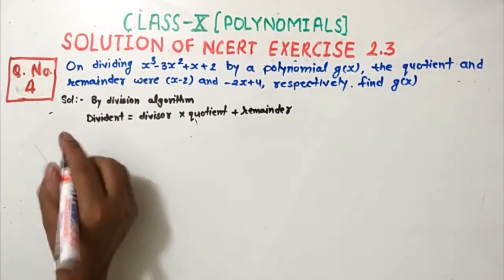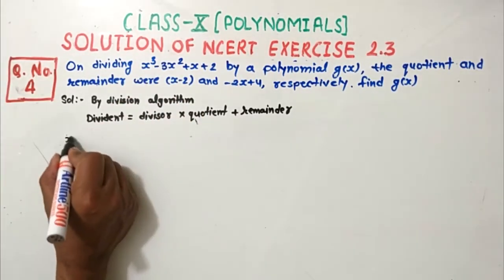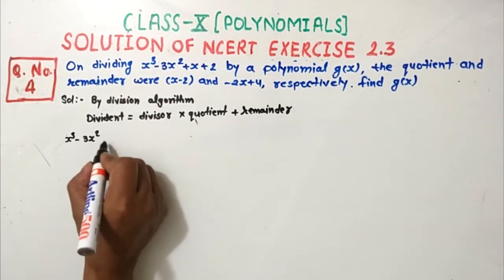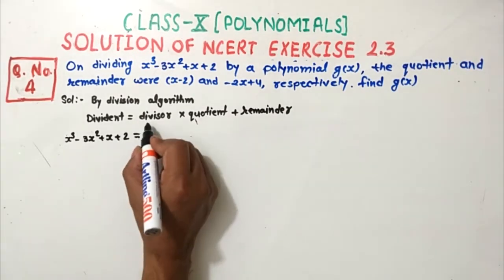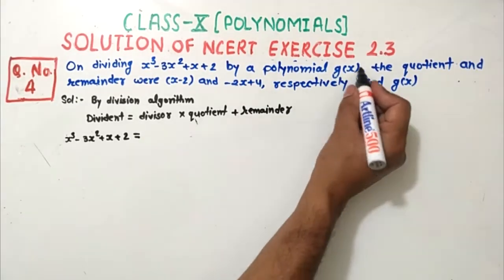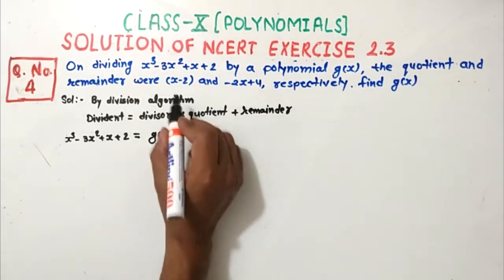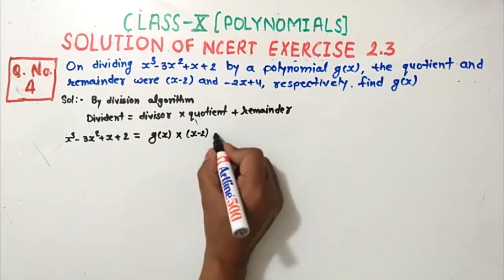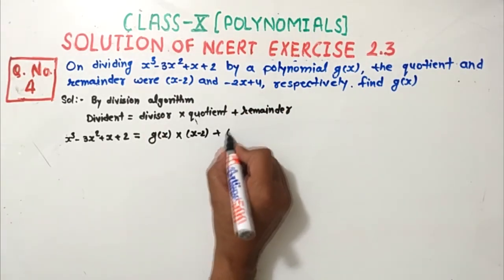The dividend given to us is x³ minus 3x² plus x plus 2, which is equal to the divisor — we assume that is g(x) — into quotient, which is x minus 2, plus remainder, which is minus 2x plus 4.